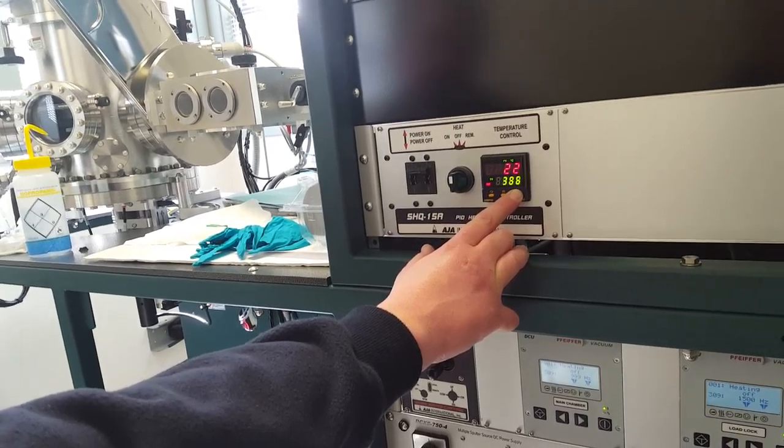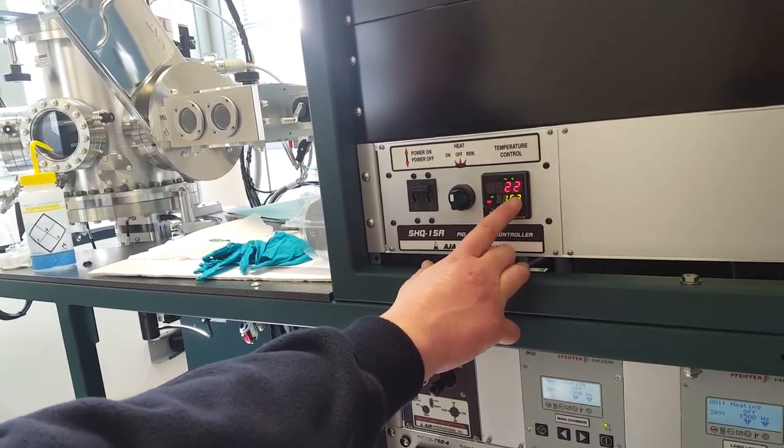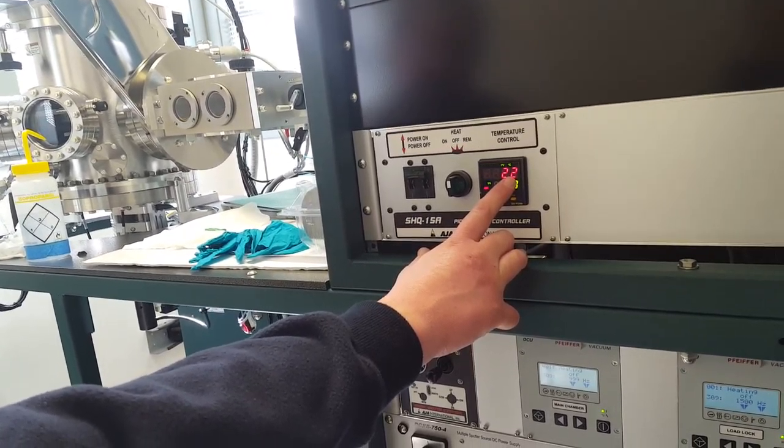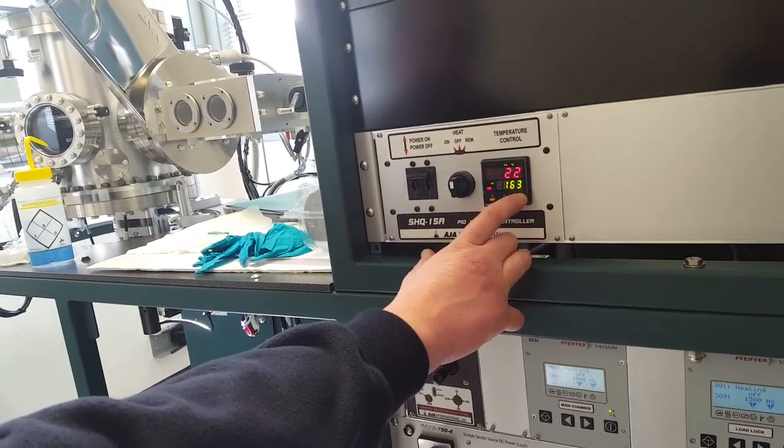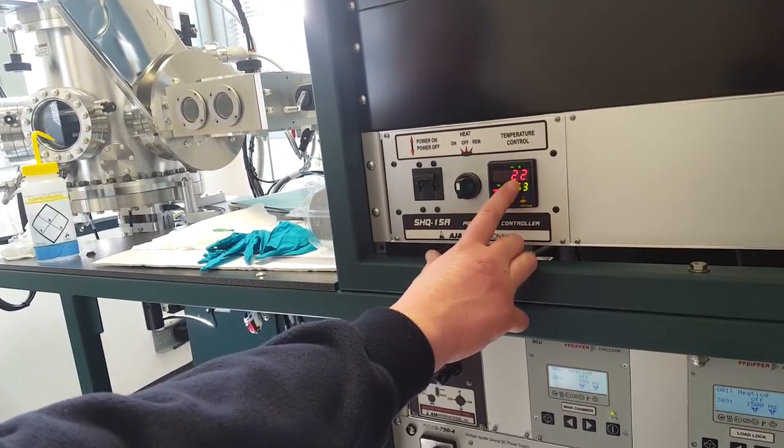Those numbers mean what? They're all in Celsius. The red ones, the green ones? The green ones are your set value, the red one is what the thermocouple is measuring.